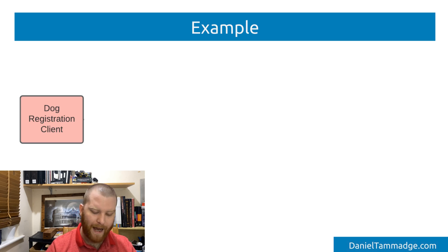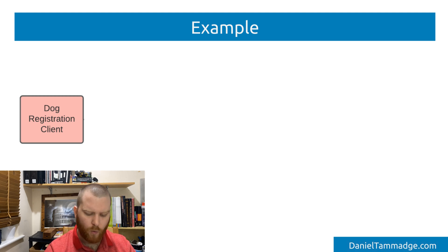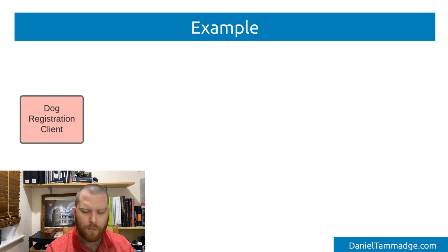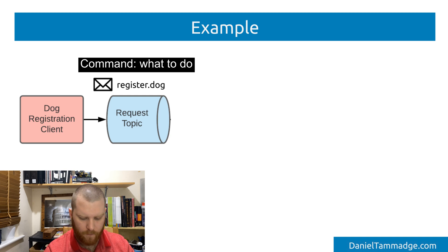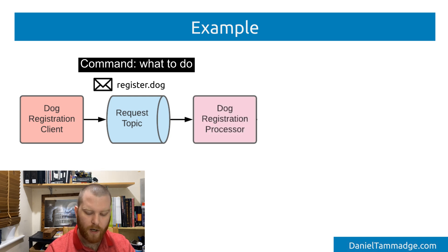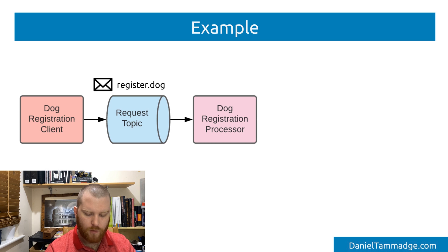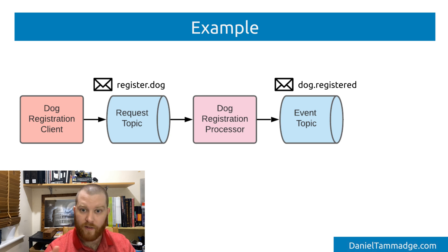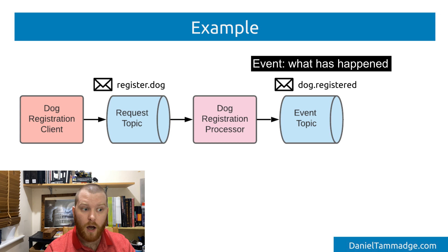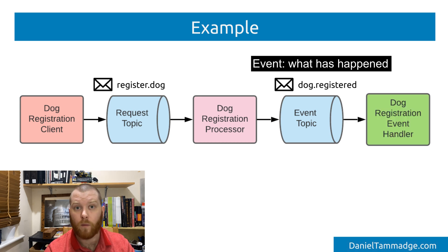In this example, we have a client which is the website where an owner would register their dog. Once the owner has filled in the form and clicked on register, the application would then publish a message to the request topic, and the command could be 'register dog.' That topic would then be consumed by another service which would process the message, and once it has successfully processed the message, it could then publish another message to an event topic or event stream, which could then be subscribed to by one or more services.